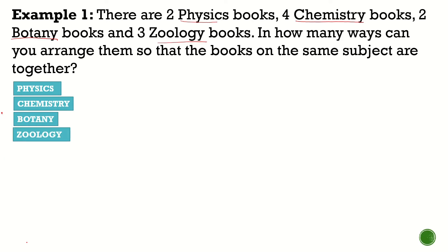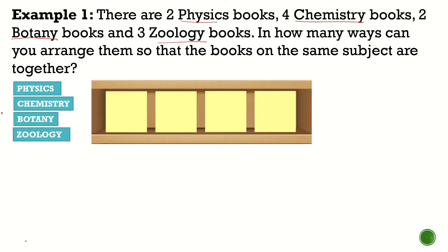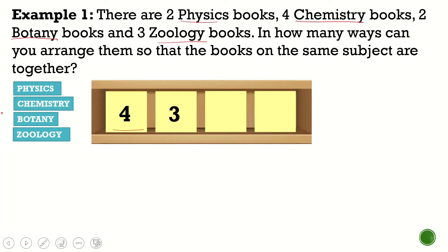So we can have an arrangement like physics books first, chemistry books second, botany, zoology. Or it can also be chemistry first, then physics, botany, or zoology, et cetera. To compute that, in the first slot we have four possible options. We put one there. On the second slot, we only have three options. On the third slot, two options. And on the last one, one. So we multiply those numbers: 4 × 3 × 2 × 1, and that gives us 24.